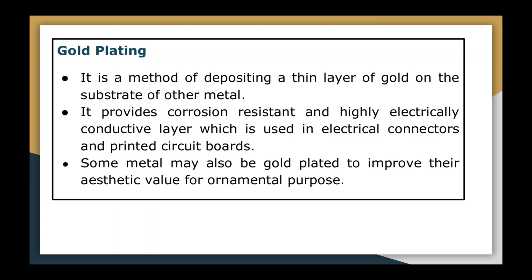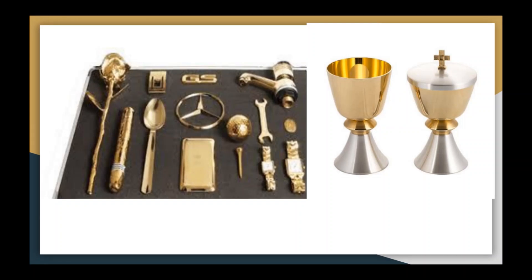Gold plating is a method of depositing a thin layer of gold on a substrate of another material — most often silver or copper. It provides a corrosion-resistant and highly electrically conductive layer used in electrical connectors and printed circuit boards. A major problem with gold plating on copper is that copper atoms tend to diffuse through the gold layer, causing tarnishing and formation of oxide or sulfide layers. To avoid this, a layer of a barrier metal like nickel is applied over the copper substrate before gold plating, as nickel atoms do not diffuse into the gold. Some metals are also gold plated to improve their aesthetic value for ornamental purposes.